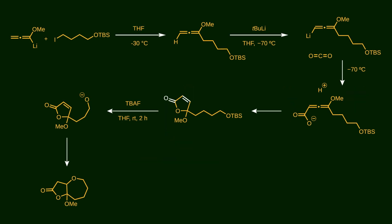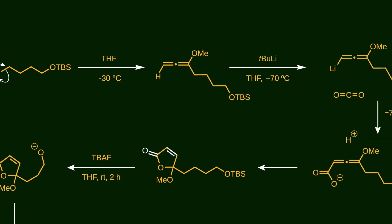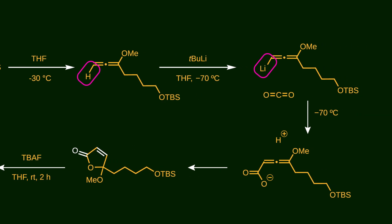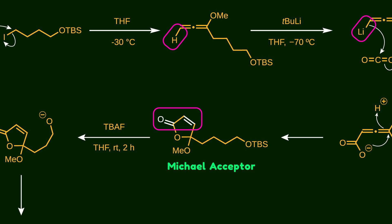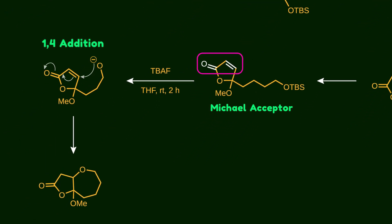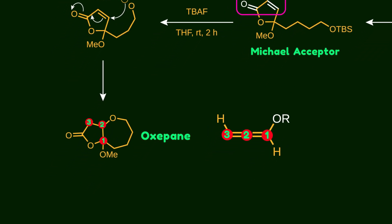Let's look at a practical approach that utilizes alkoxy allenes. In this case, lithiated methoxy allene undergoes an SN2-type reaction with an alkyl iodide. Treatment with tert-butyl lithium deprotonates this carbon atom, generating a nucleophilic species that can trap carbon dioxide by attacking its carbon atom. In this sequence, the oxygen atom attacks with its carbon atom to create a 5-membered ring. The resulting intermediate is a Michael acceptor. After deprotection with tetra-butyl ammonium fluoride, the nucleophilic oxygen attacks a double bond to produce an oxepine skeleton. You can see how allenes can serve as a three-carbon building block to construct challenging targets like the oxepine skeleton, by leveraging both their nucleophilic and electrophilic properties simultaneously within the same reaction.